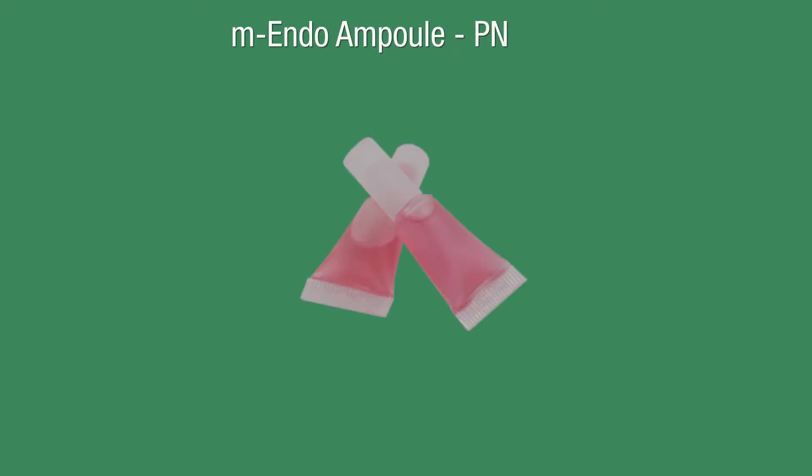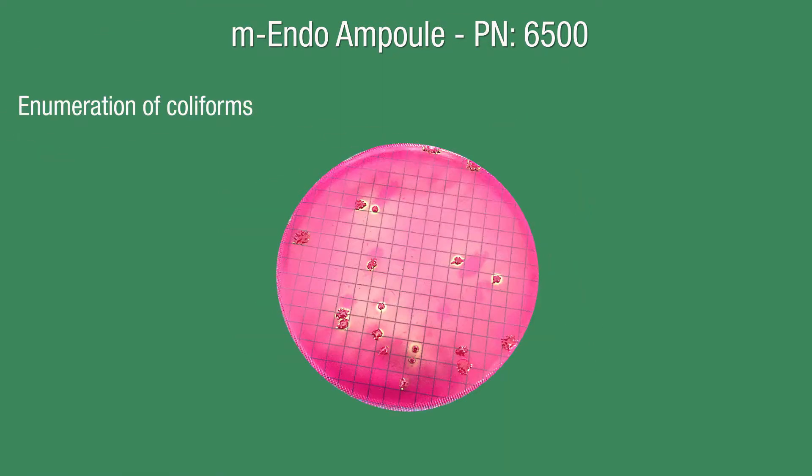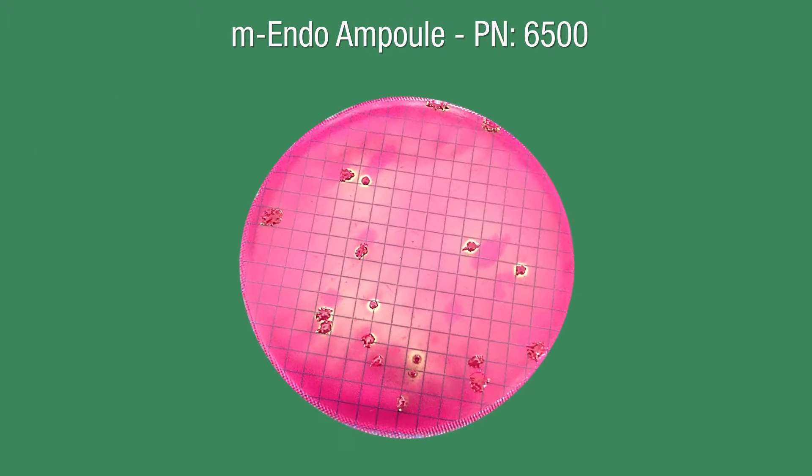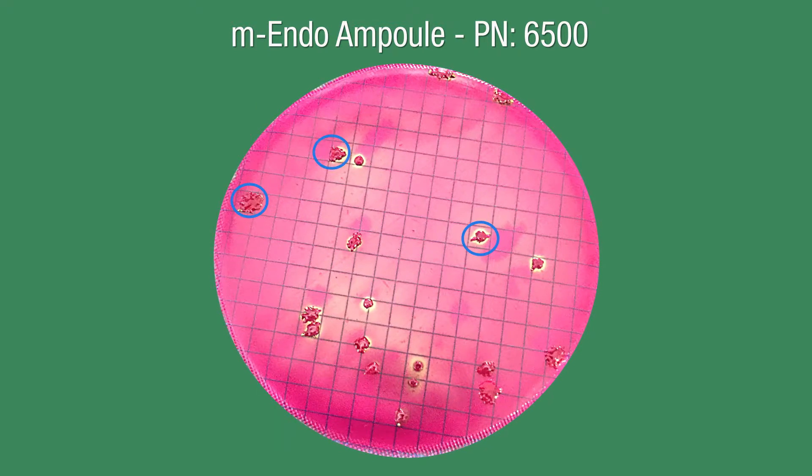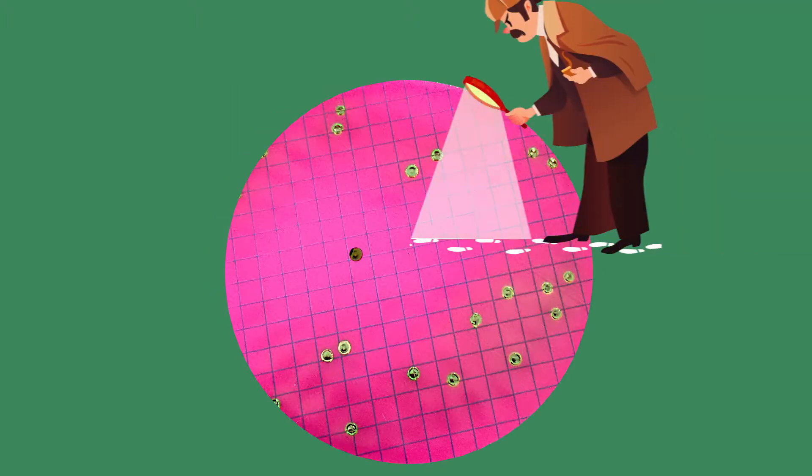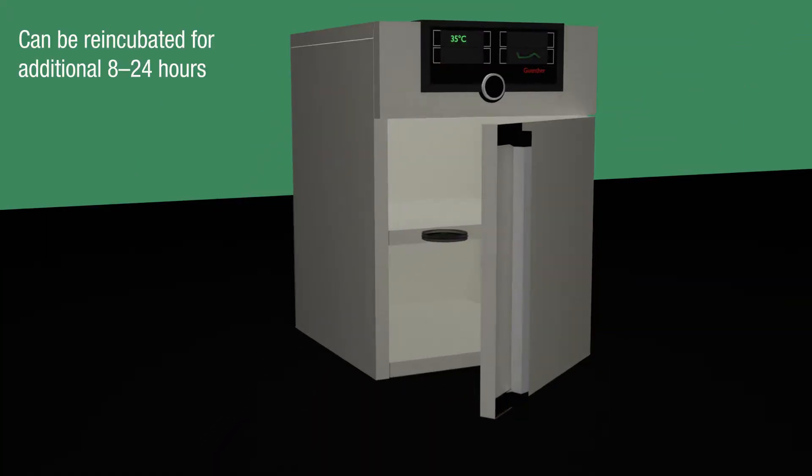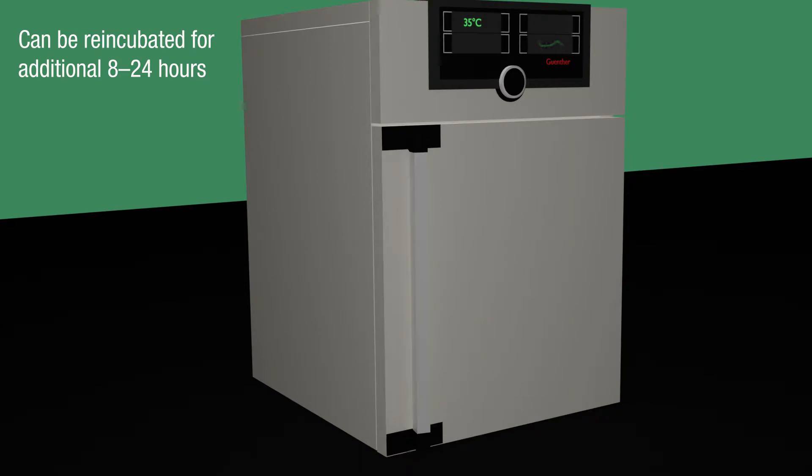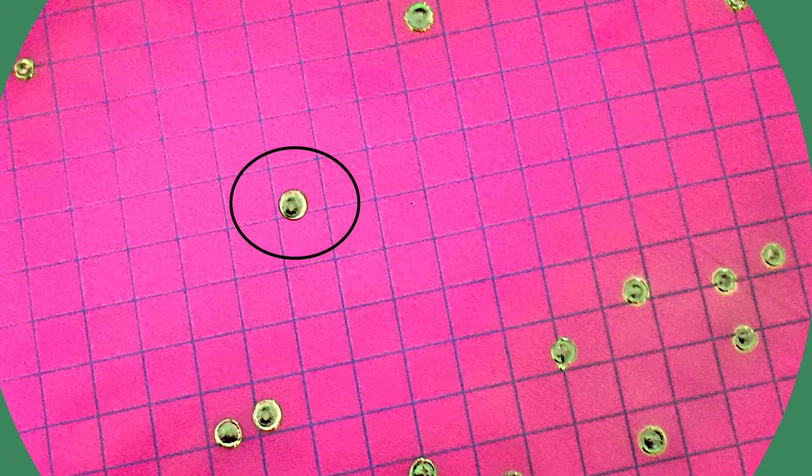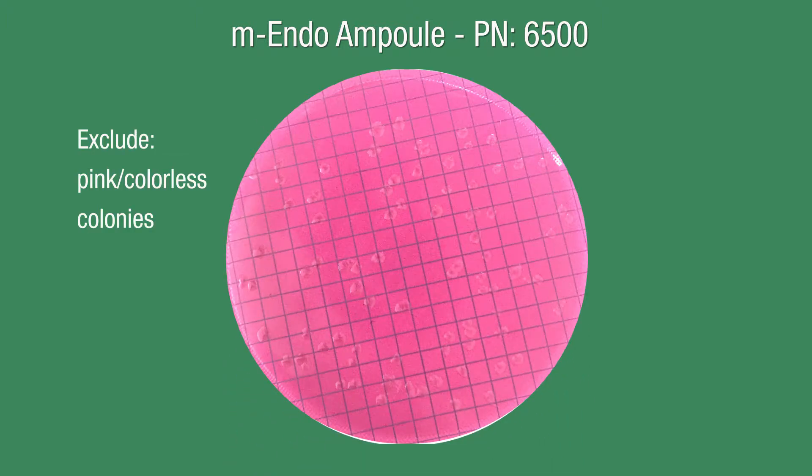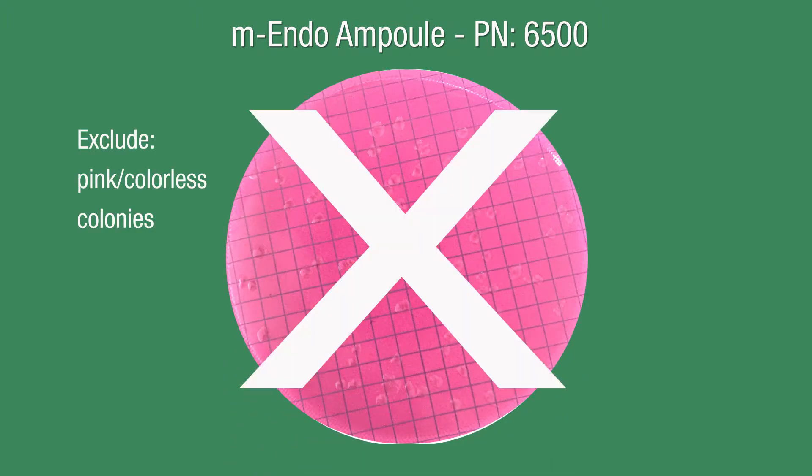M-endo ampule. Recommended by APHA and U.S. EPA, this media is for the enumeration of coliforms. All red colonies with any amount of green metallic sheen should be counted and recorded as positive for coliforms. If there is a suspect red colony, the petri dish monitor can be re-incubated for an additional 8 to 24 hours to see if a more defined sheen develops, as it may be a slow lactose fermenting coliform. Pink or colorless colonies can be excluded as they are not coliforms. This media is selective.